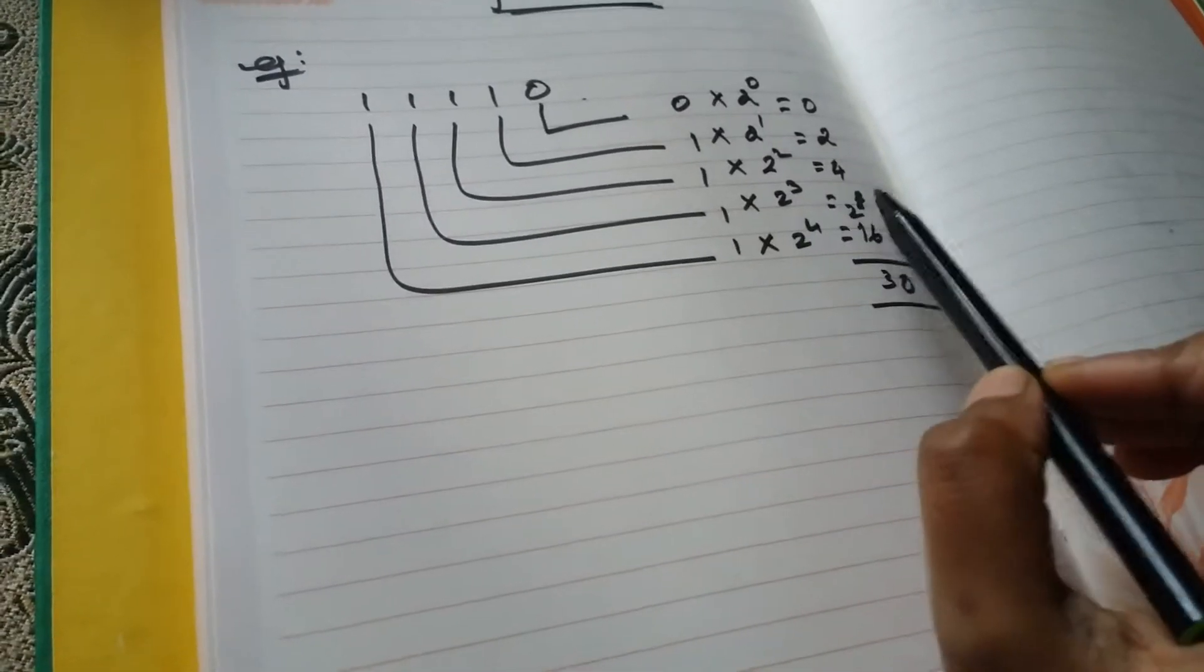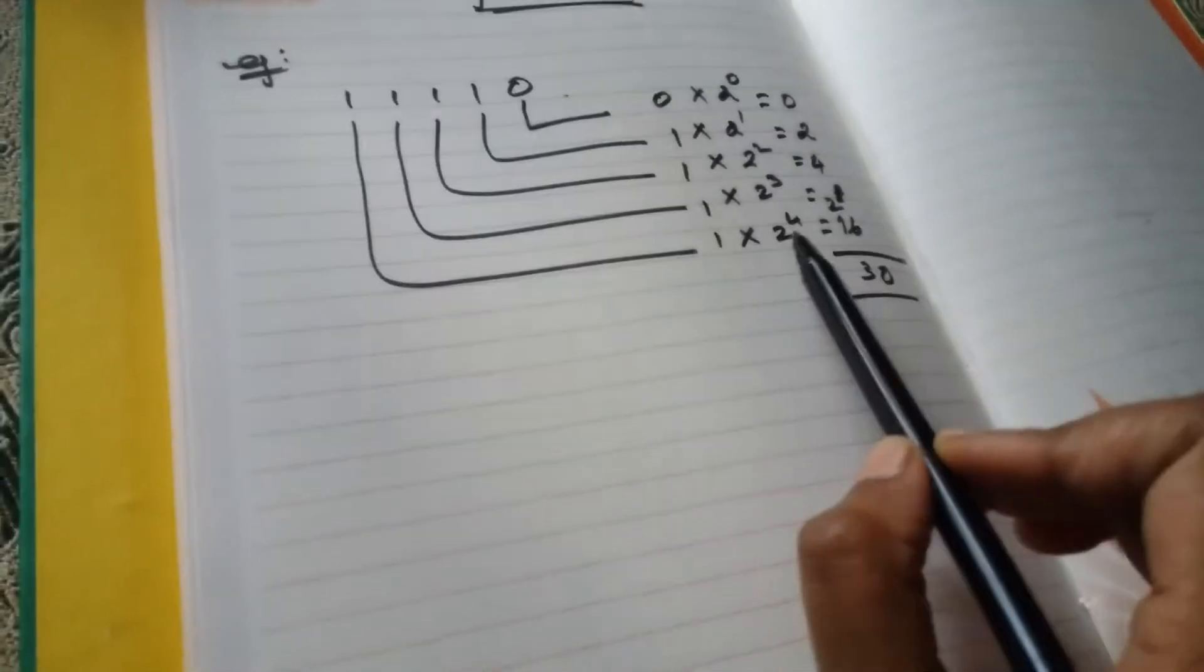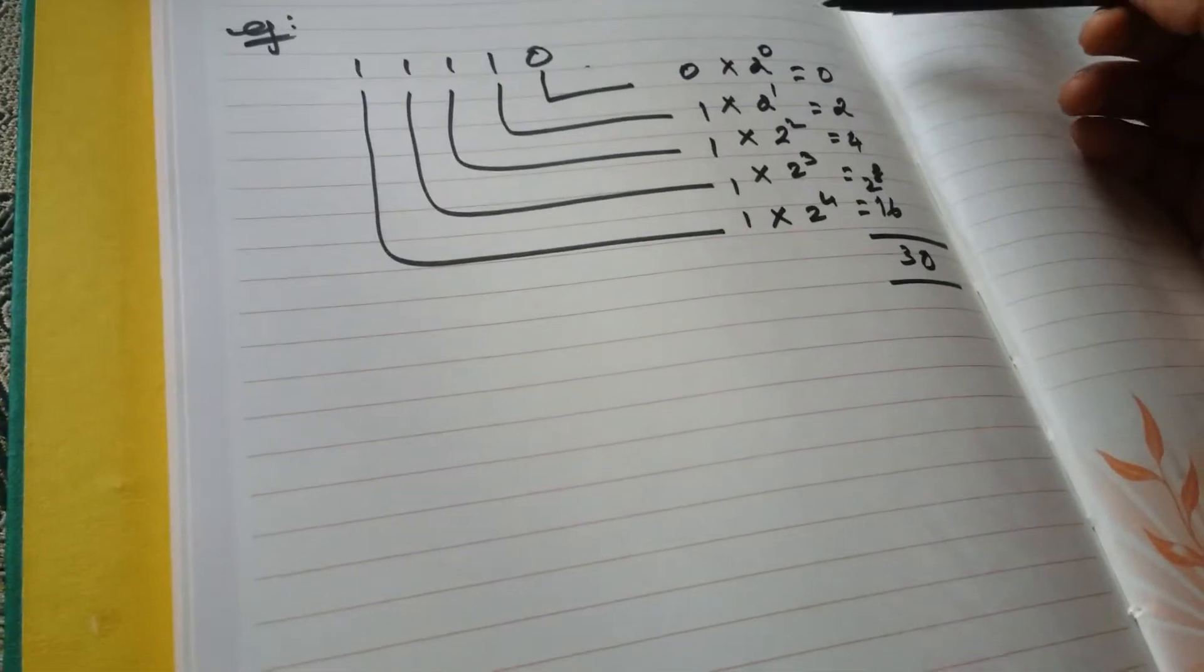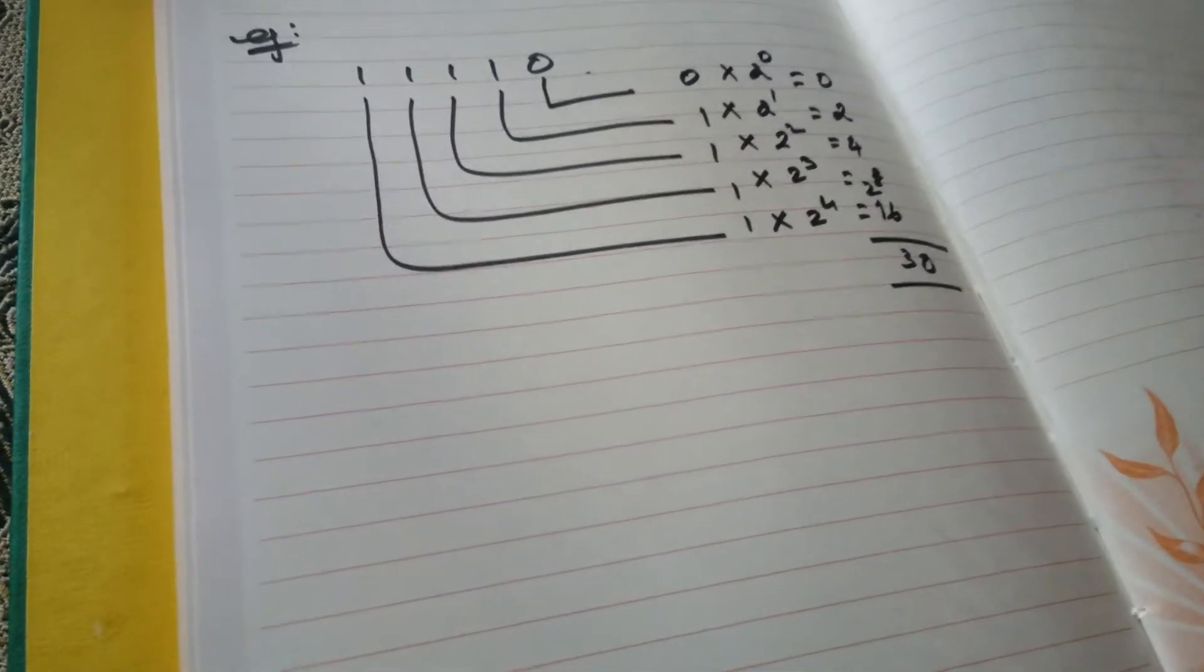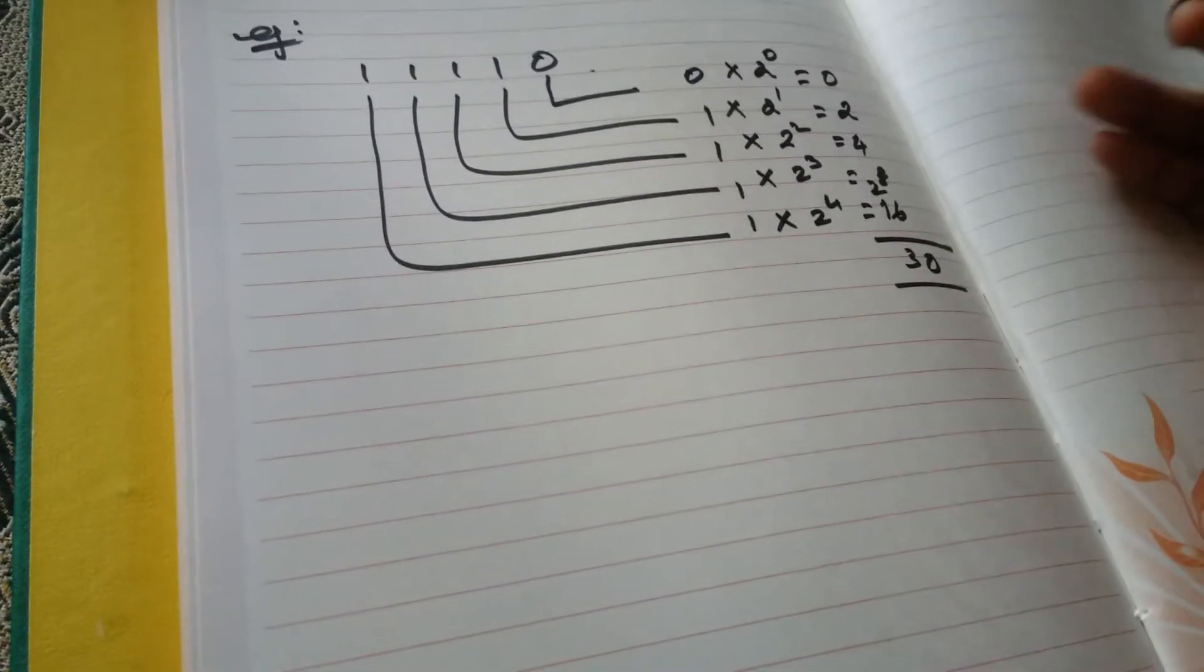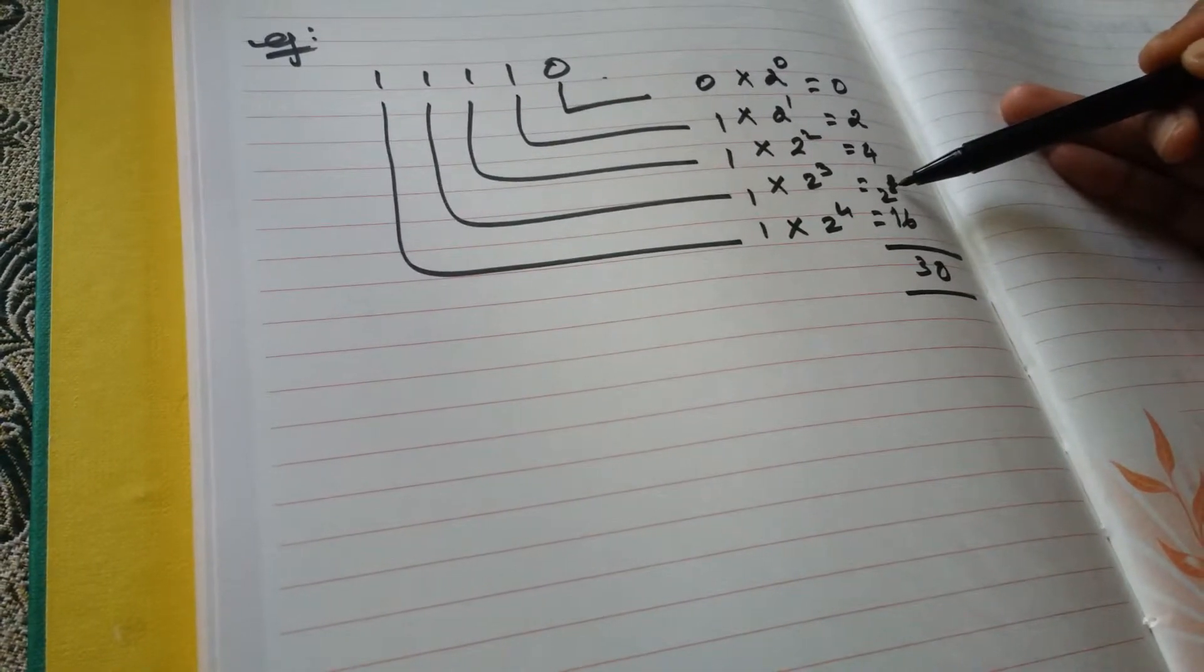One into two power three is eight. Then one into two power four is sixteen. Then you have to add up all these.